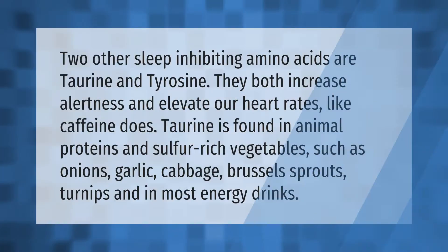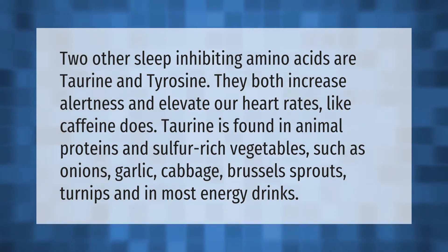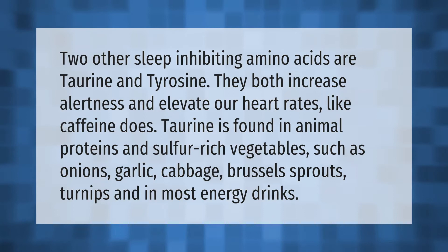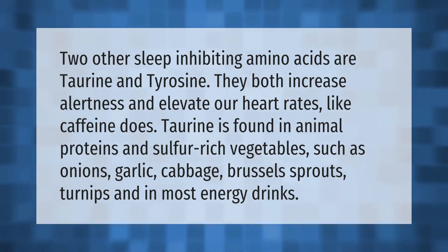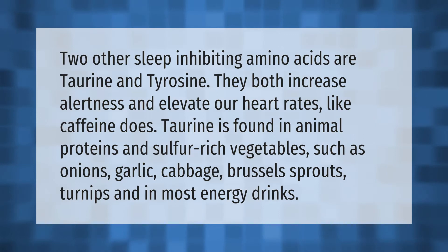Two sleep-inhibiting amino acids are taurine and tyrosine — they both increase alertness and elevate heart rates, as caffeine does. Taurine is found in animal proteins and sulfur-rich vegetables such as onions, garlic, cabbage, brussels sprouts, and turnips, as well as in most energy drinks.